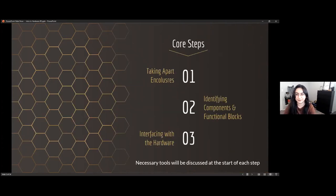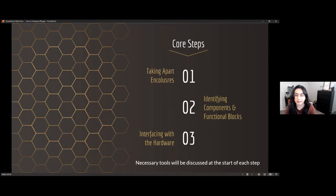I'm going to break this talk into some core steps: taking apart enclosures — how to get to the hardware; identifying components and functional blocks; and interfacing with the hardware. I'll cover the necessary tools for each step so it's not just a big dump up front. Hopefully that'll make it easier to understand. This talk is focused towards beginners, so I'm sorry if it's too basic or if I'm very broad — let me know at the end. This is the first time I've done this talk so I'd really enjoy your feedback.